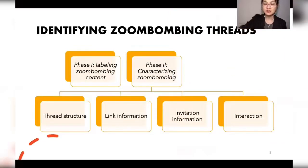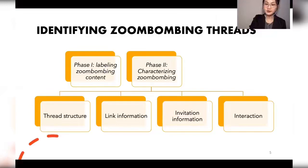Automatically identifying calls for attack is challenging. We built our codebook and performed annotations to identify posts that contain online meeting information. The coding process has two steps. First, we perform binary labeling to determine if posts are indeed calls for Zoom Bombing or not. Second, we further categorize the posts and threads containing Zoom Bombing invitations across four aspects: thread structure, link information, invitation information, and interaction, with the goal of understanding attacker behavior and target selection.